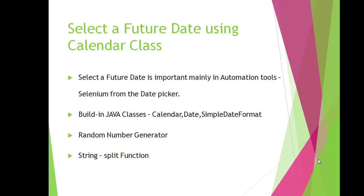To select a future date using the Calendar class, we have to understand this from the Selenium perspective. In Selenium, websites have date pickers which are useful to select a future date. From the Java perspective, there are built-in classes such as Calendar, Date, and SimpleDateFormat, which are useful to generate a future date from the current date — for example, 10 or 20 days from now. If we want to generate a random number for that offset, we need the Random class available in the Java API.